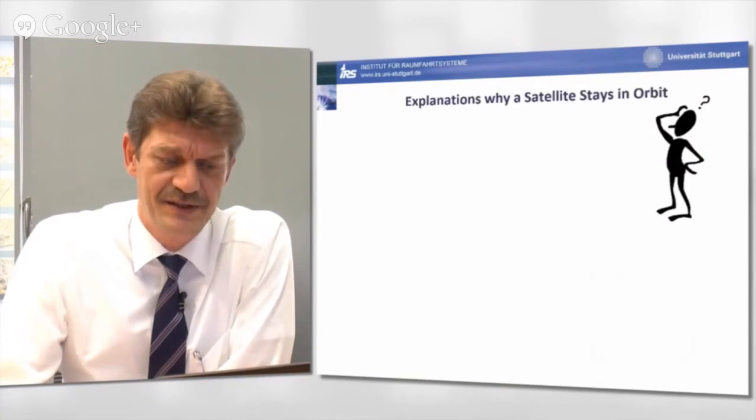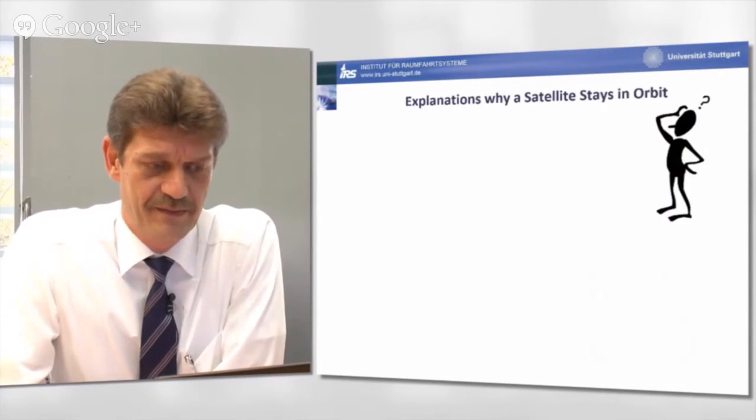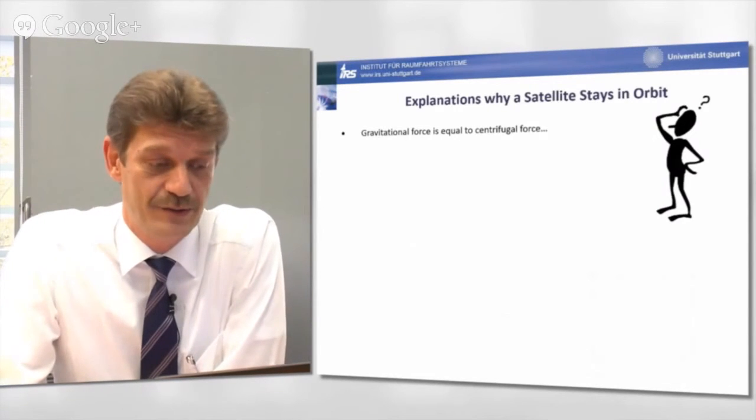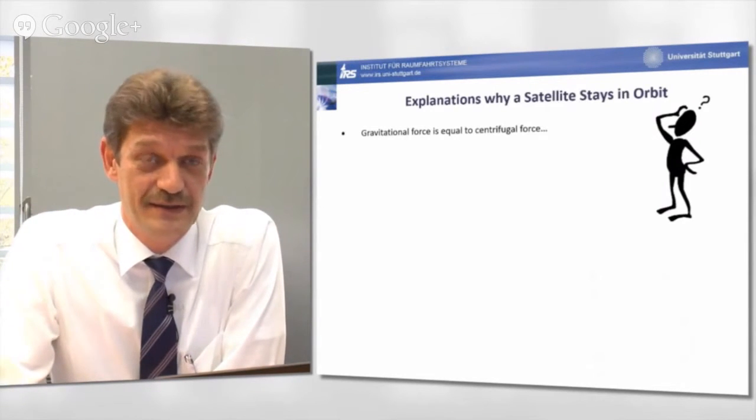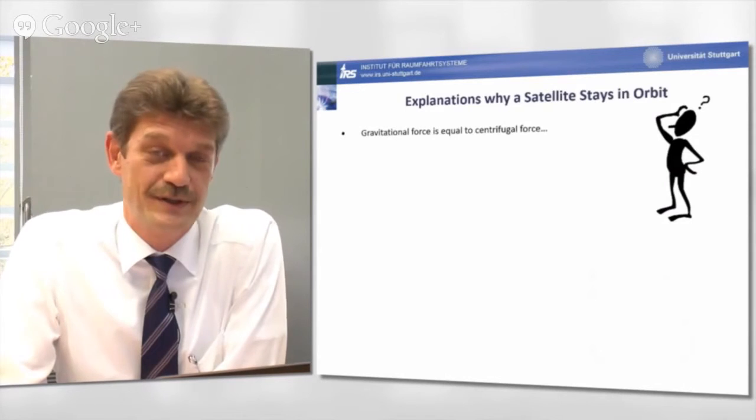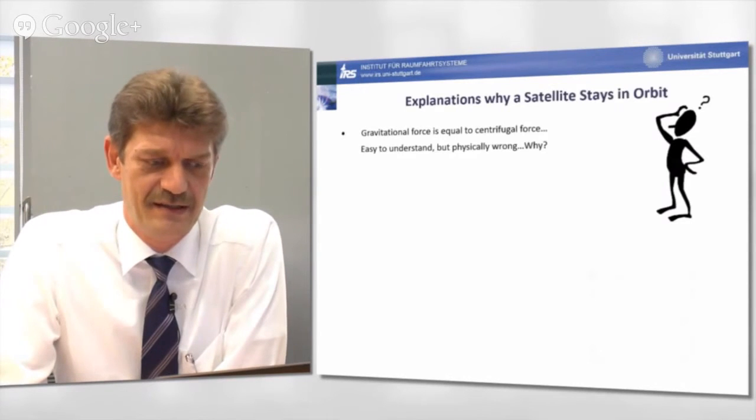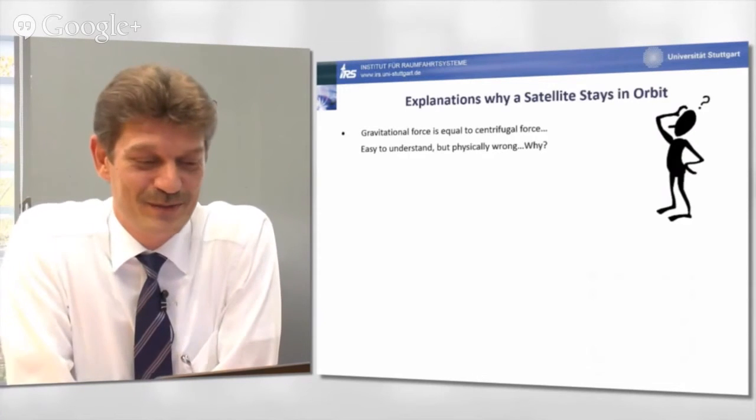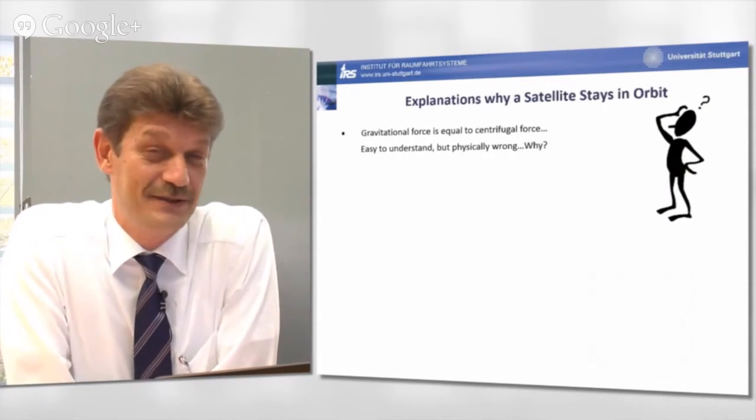Now, we can easily answer one of the questions. Why does a satellite stay in orbit? Very frequently, I hear the answer, gravitational force is equal to centrifugal force. This is easy to understand, of course, from an engineering point of view, but physically wrong. Why is this the case?